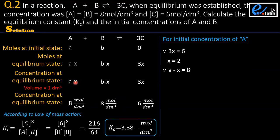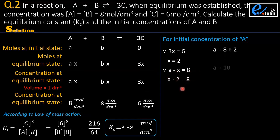A minus x is the concentration of A at equilibrium, and 8 moles per dm³ is the concentration of A at equilibrium — these are the same. So we write A minus x equals 8. Putting the value of x equals 2 into this formula, the value of A is 10. The number of initial moles of A is 10, and dividing by volume 1 gives 10.